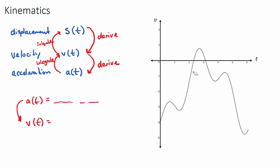A common IB exam question is: how many times does the object change direction? Many students count every peak and trough of the curve, but that's incorrect. The object only changes direction when the velocity crosses zero — going from negative to positive or positive to negative. In this case, that happens only twice, so the object changes direction just twice.